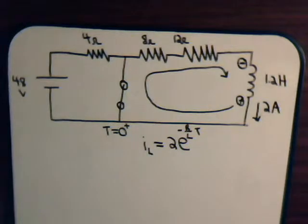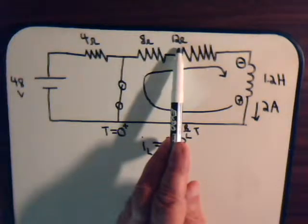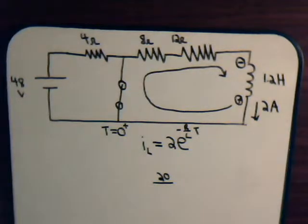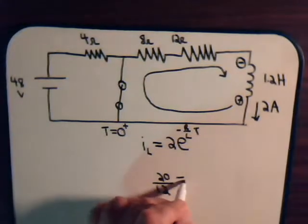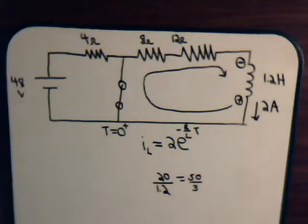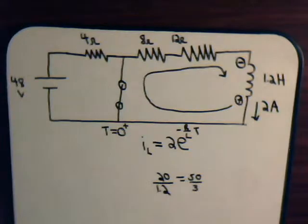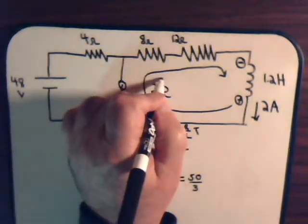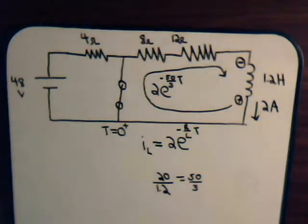And for this decay circuit, the total resistance is 8 plus 12, that's 20 ohms. So we have 20 divided by 1.2. I think that's the same thing as 50 divided by 3. So the decay current that moves around like this would be 2 times e to the minus 50 over 3 times T. T of course is the time.